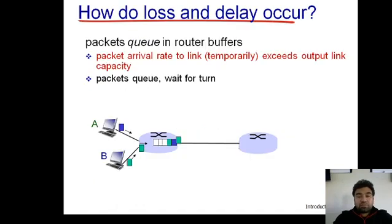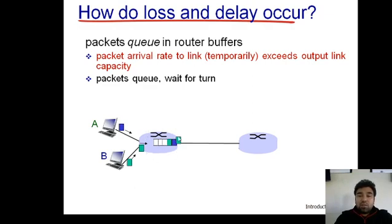First, let's look at queuing delay. Packets queue in router buffers when the packet arrival rate to a link exceeds the output link capacity. If the arrival rate is more than the transmission rate, the router has to keep some packets in its buffer, forming a queue. The time spent in this queue is called queuing delay.